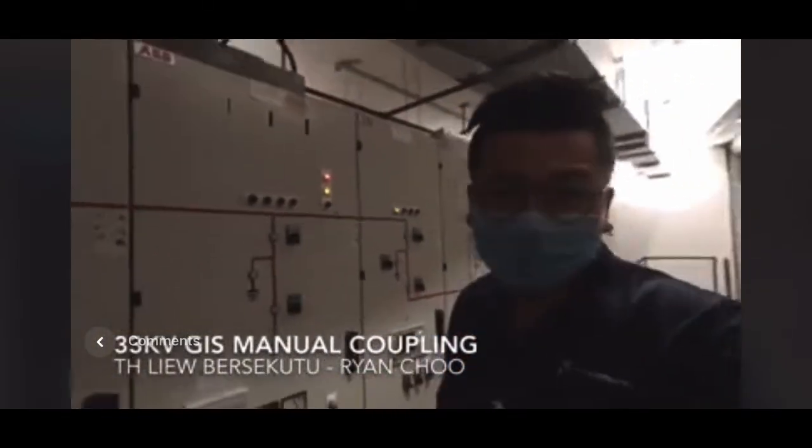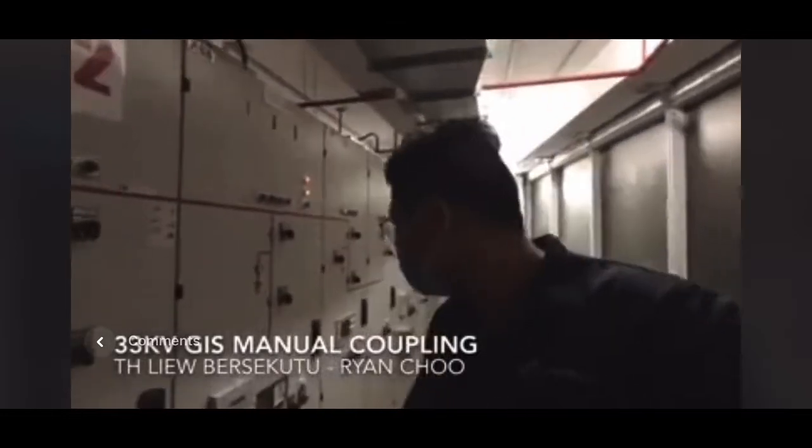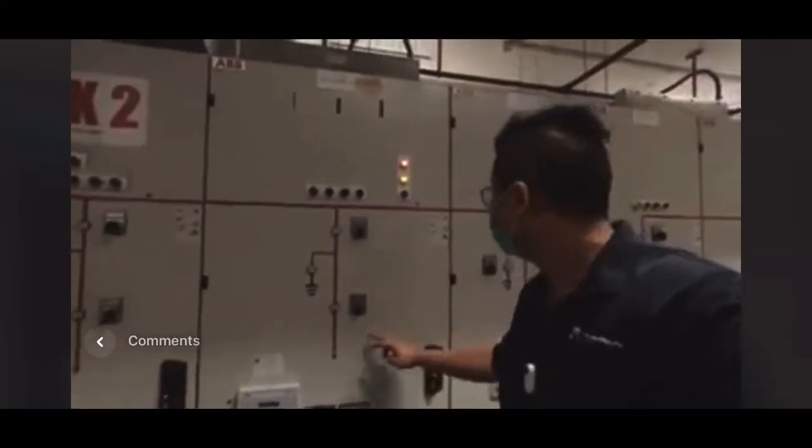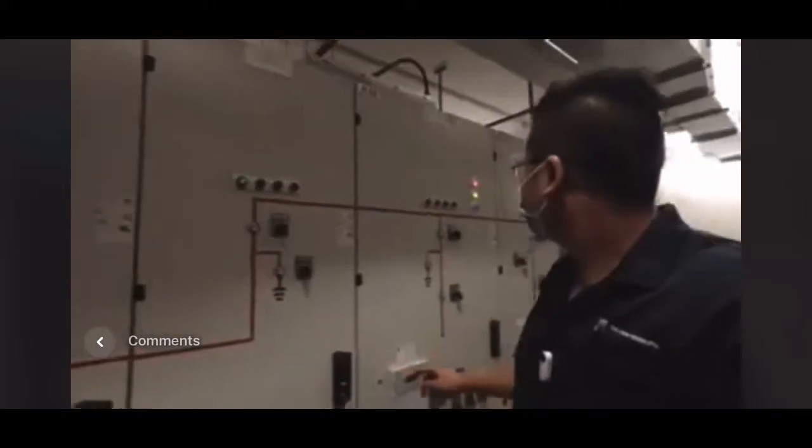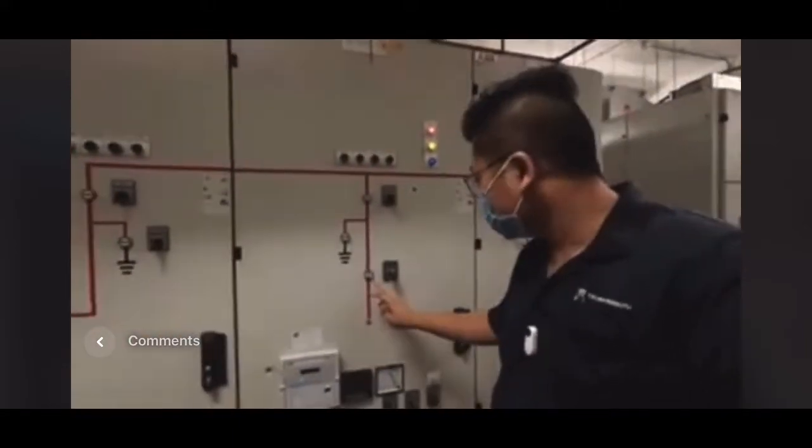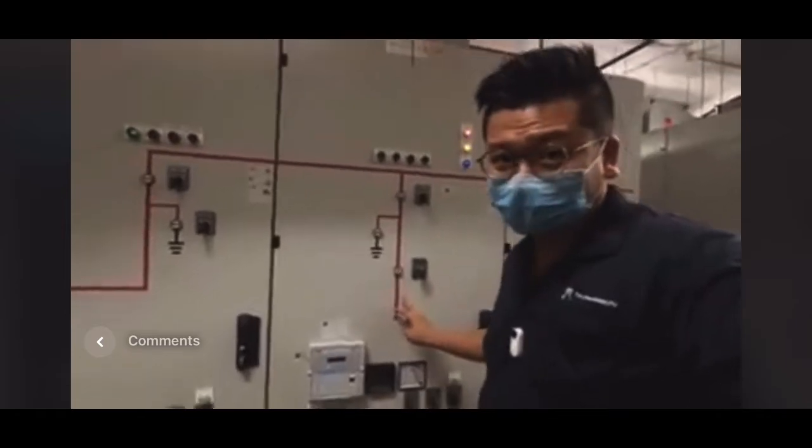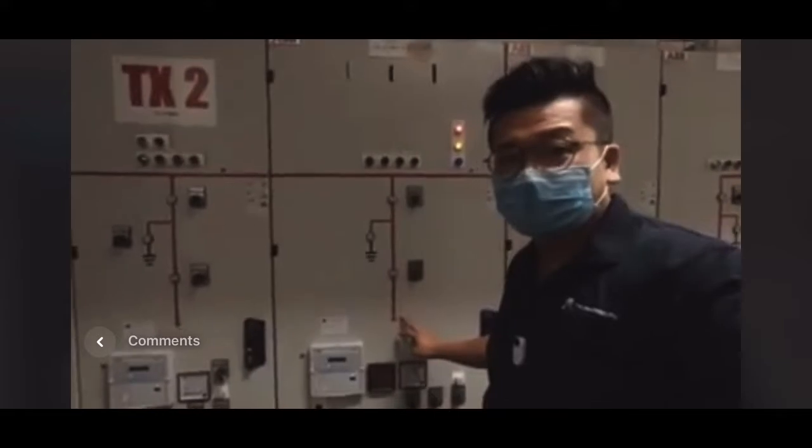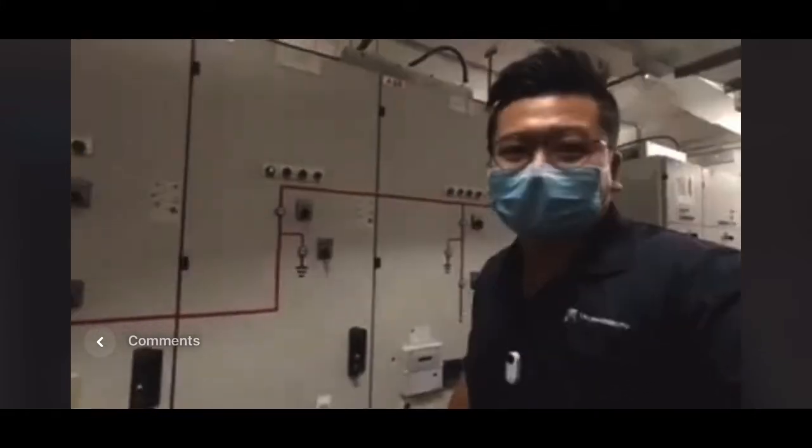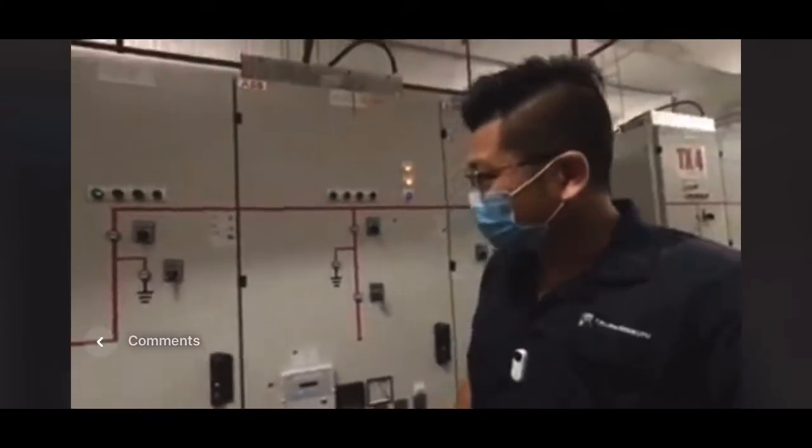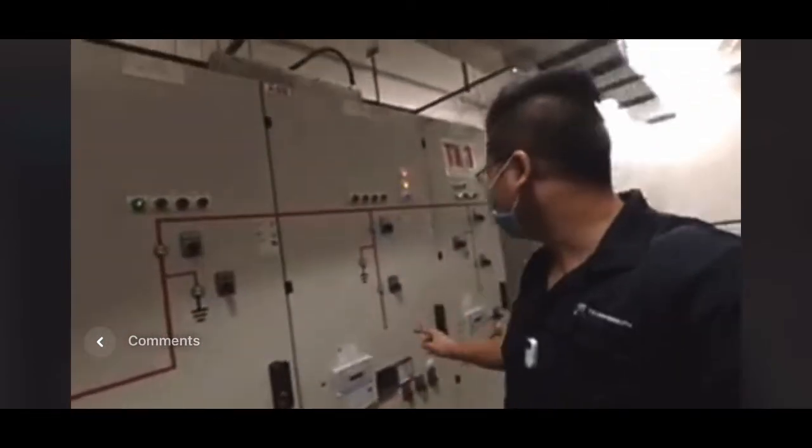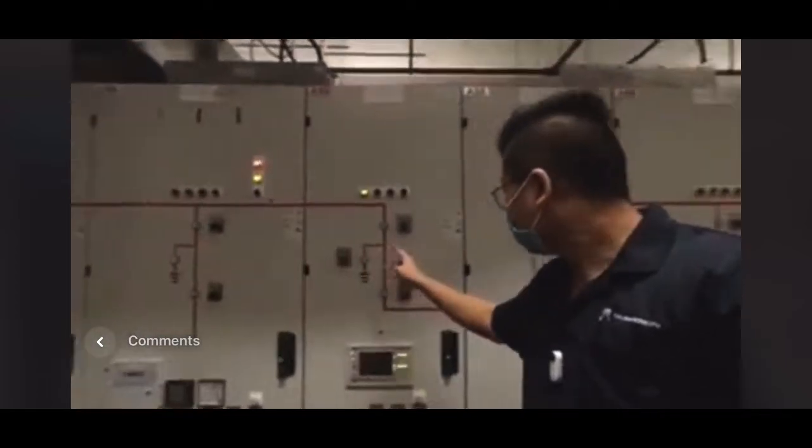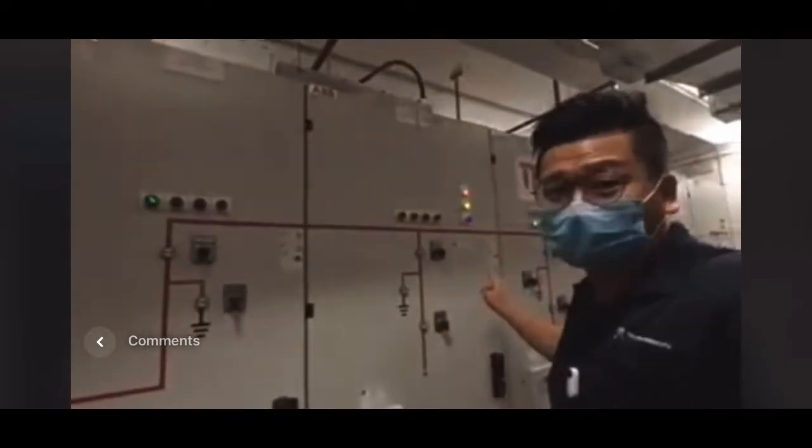Here we have the ABB GIS switchgear. Currently we have two incoming gear: Incomer number 2 and Incomer number 1. Notice that TNB supply is present. So we are going to initiate the coupling by switching from Incomer number 1 and using Incomer number 2 to coupling Incomer number 1 plus bar.